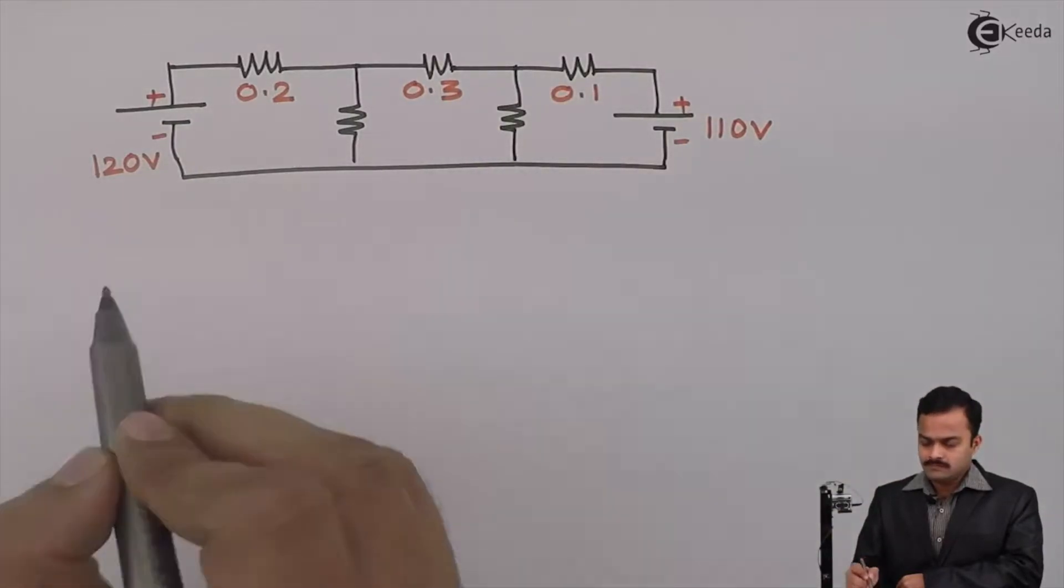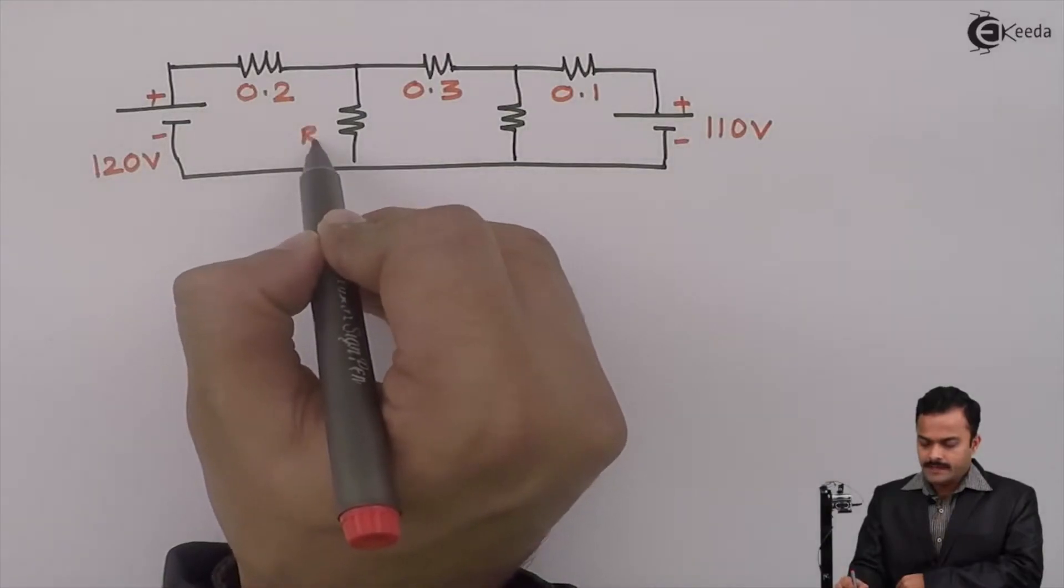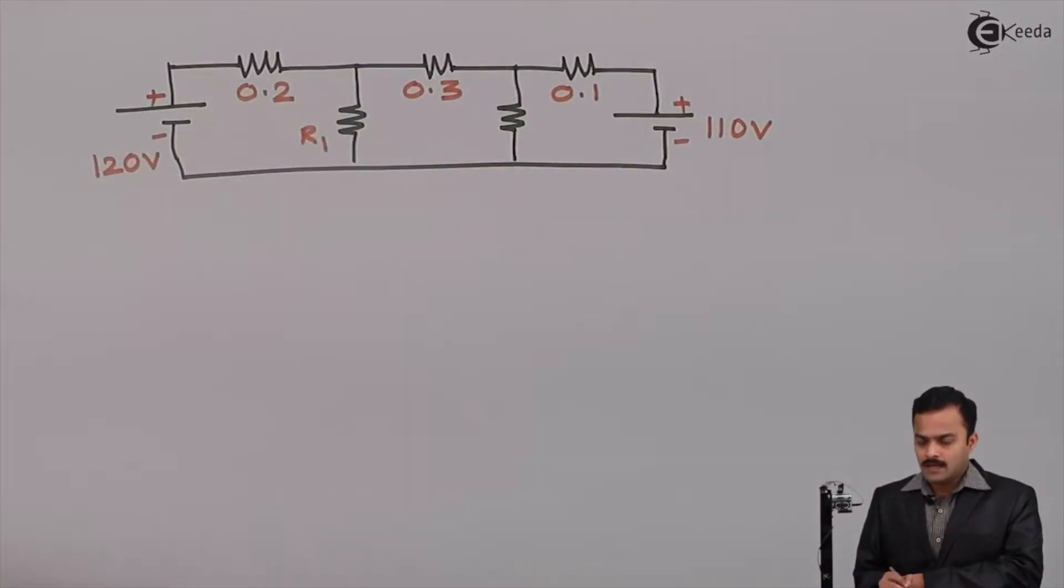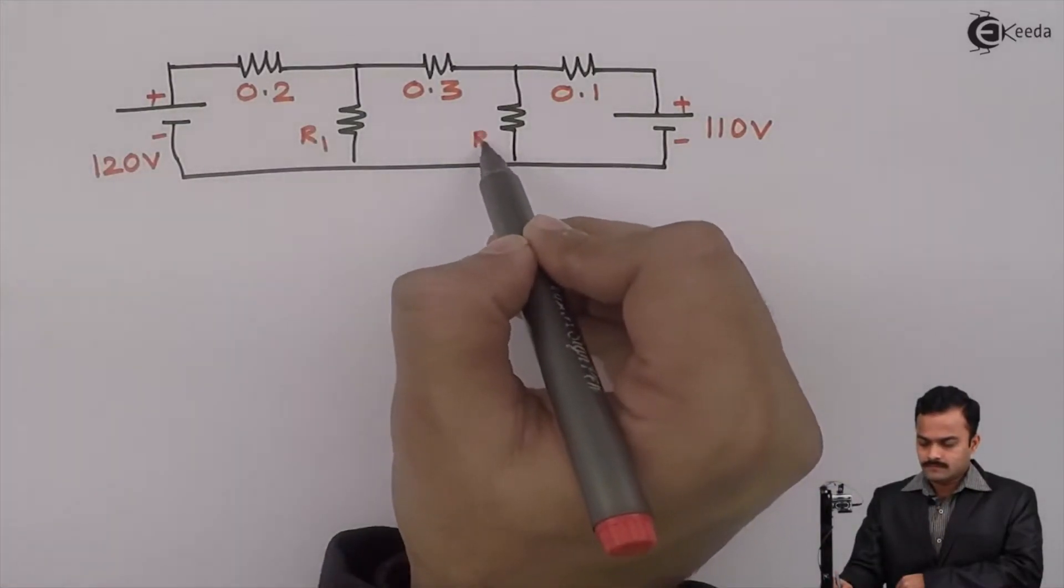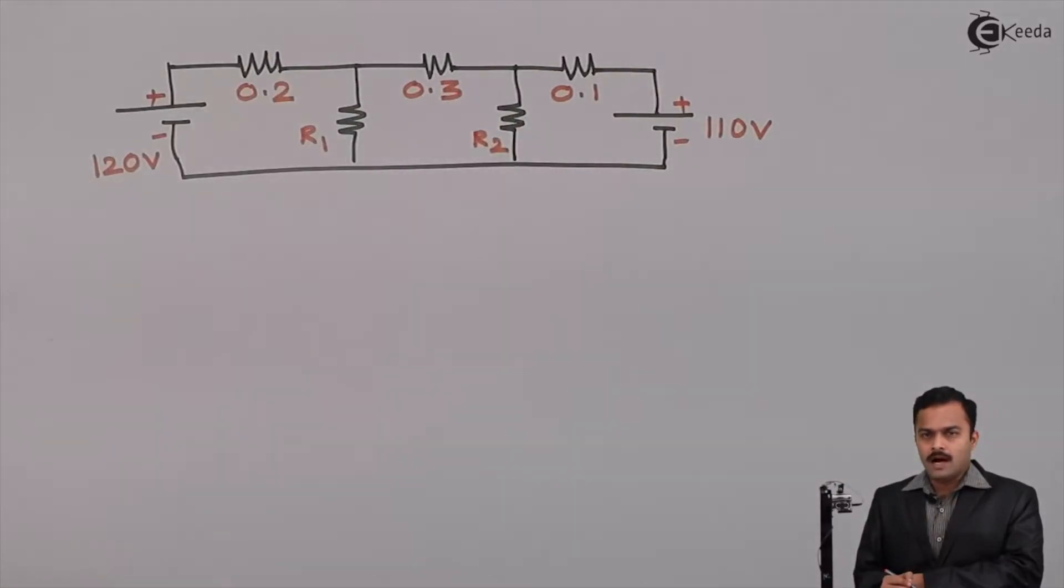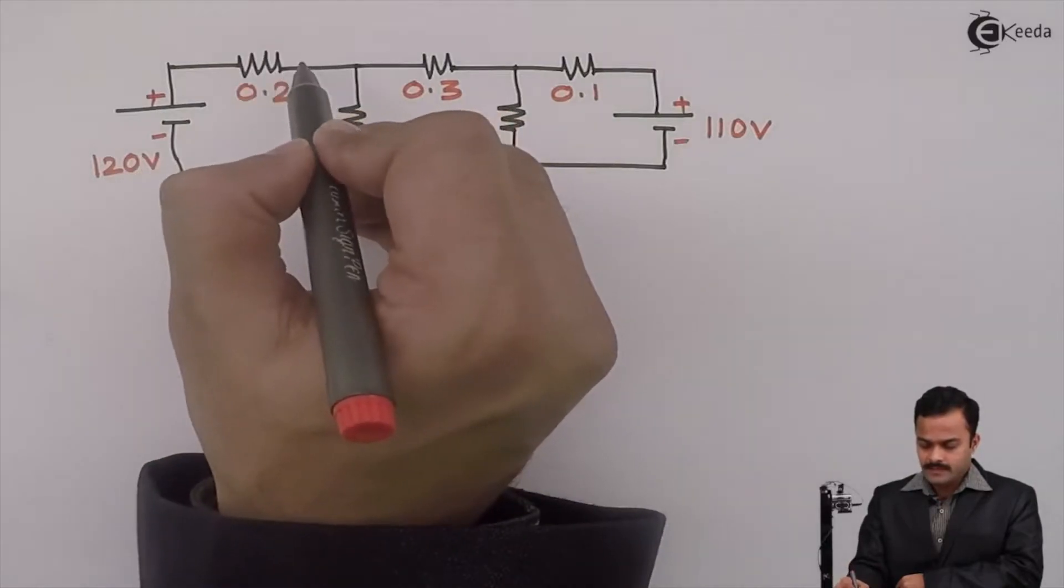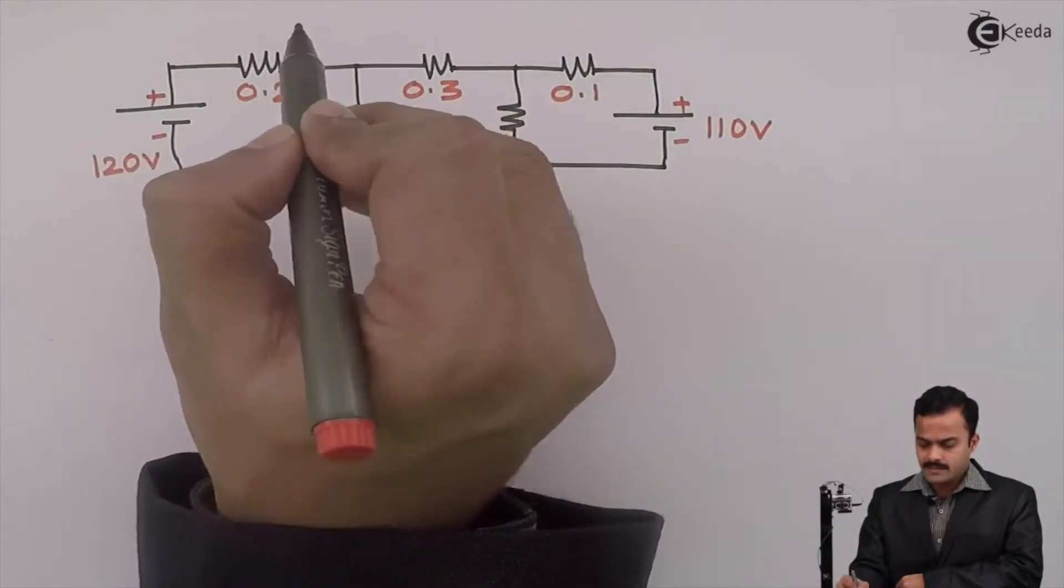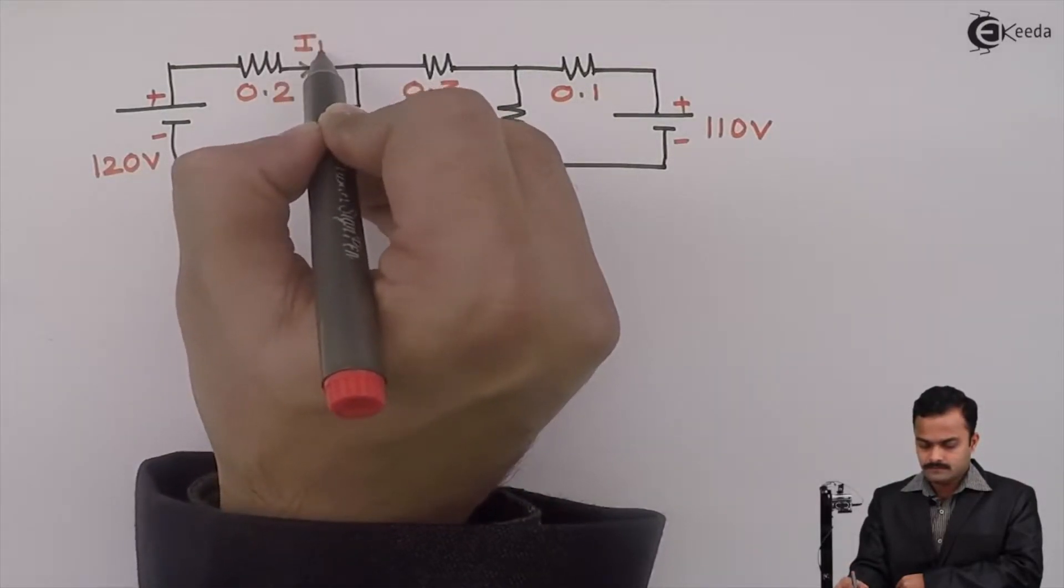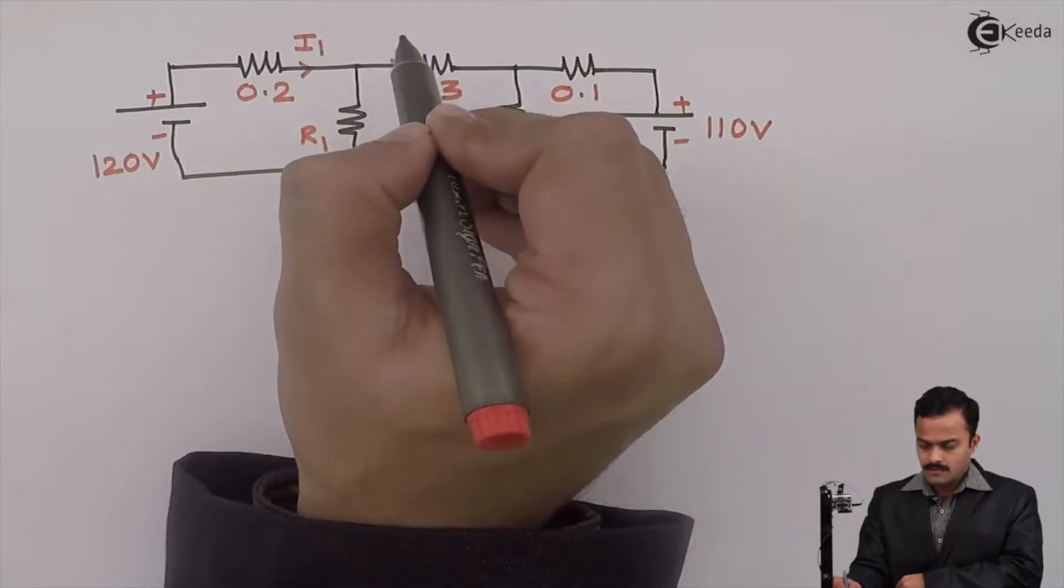0.1, I consider this is R1 and R2 and currents are given, meaning here current is given as I1, I2,